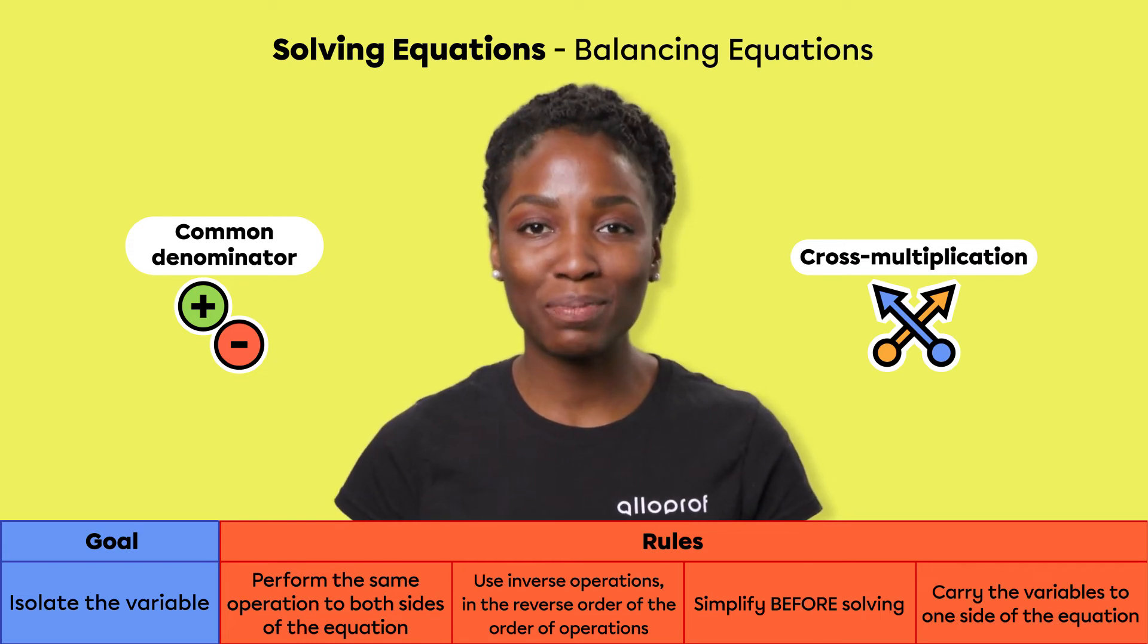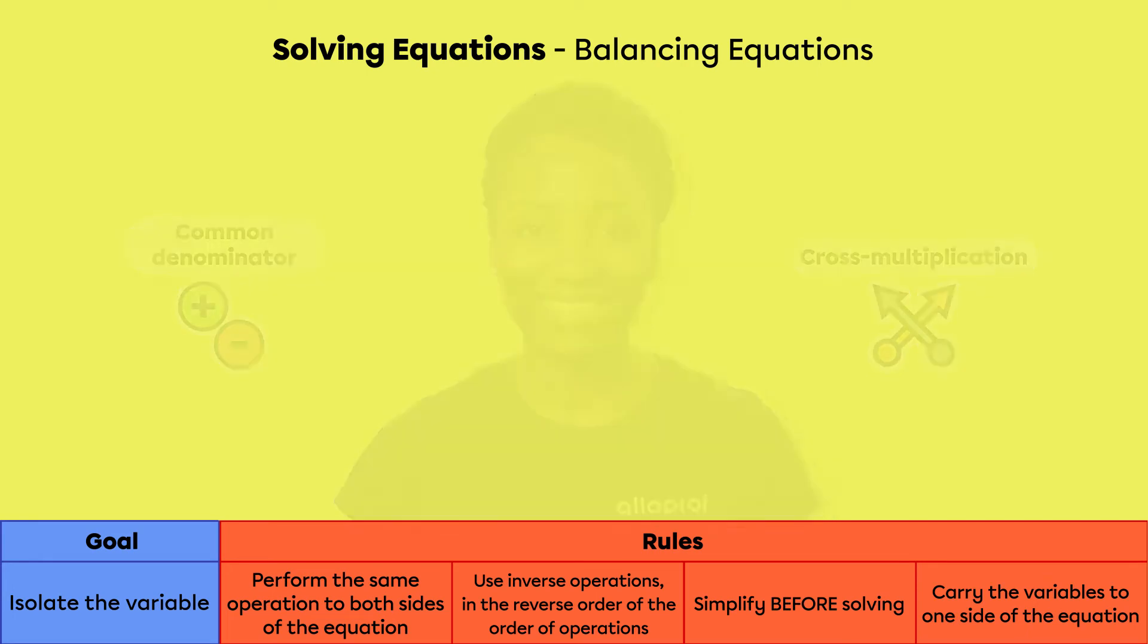Let's try a first example: h over 2 plus 3 over 5 equals 3h over 8. If we decide to use the cross-multiplication strategy, we first need to add the fractions h over 2 and 3 over 5.